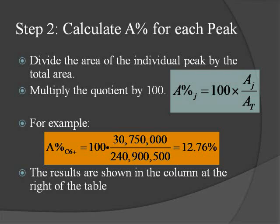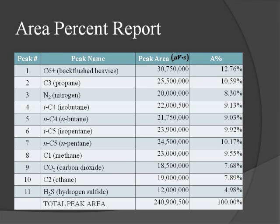Having summed up the areas of all of the peaks in the chromatogram, we now, in step two, divide the area of each individual peak by the total area, and then multiply the quotient by 100. As you see in the example below, for C6+, we're showing 12.6%, which is 30,750,000 divided by the total area of the chromatogram. Finally, we tabulate the results. You'll notice that for each individual peak in the chromatogram, we now have a percentage which expresses the relative amount of the individual component in the chromatogram, assuming that all of the peaks in the chromatogram respond exactly the same way.